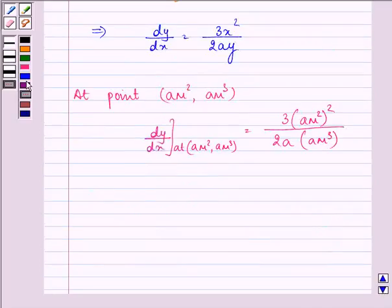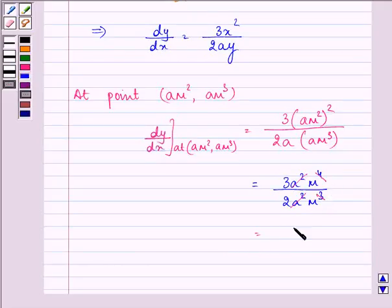Which gives us 3a²m⁴ upon 2a²m³. So, we are left with 3m upon 2.